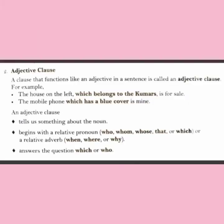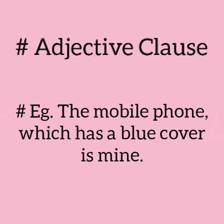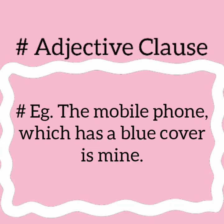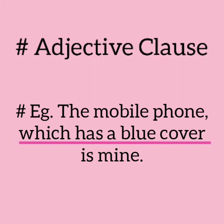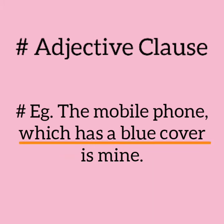An adjective clause answers the question 'which' or 'who.' For example: 'The mobile phone which has a blue cover is mine.' Here, 'which has a blue cover' is the adjective clause and it answers the question: which mobile? The mobile which has a blue cover.